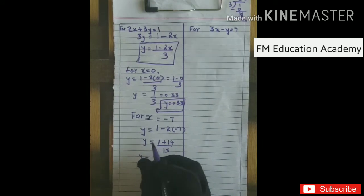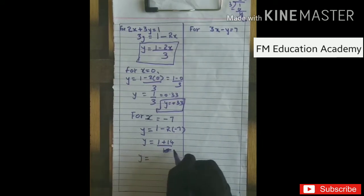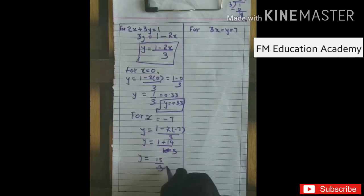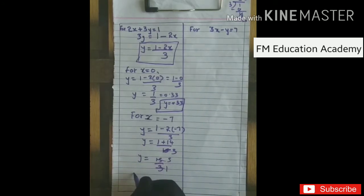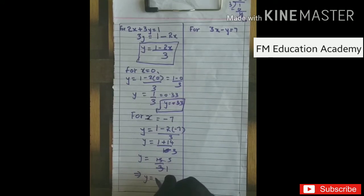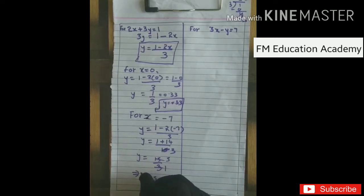For x equals minus 7: y equals 15 by 3, since 3 fives are 15. So y equals 5. So for x equals minus 7, y equals 5.